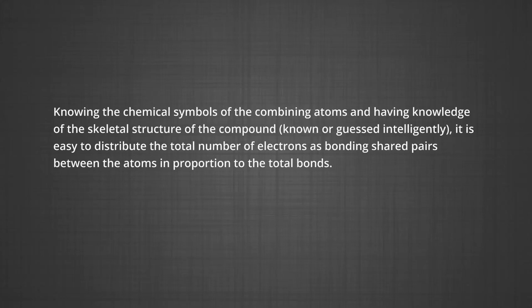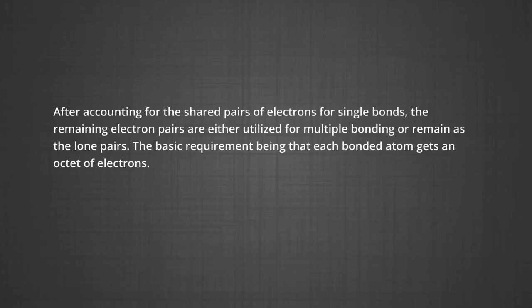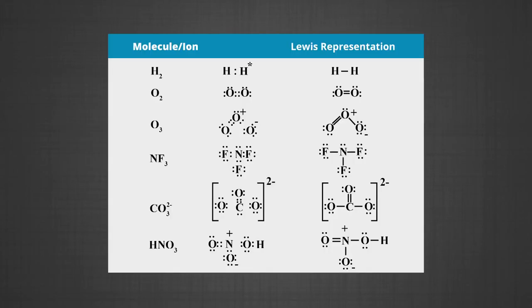It is easy to distribute the total number of electrons as bonding shared pairs between atoms in proportion to the total bonds. In general, the least electronegative atom occupies the central position in the molecule or ion — for example, in NF3 and CO3 2−, nitrogen and carbon are the central atoms, while fluorine and oxygen occupy terminal positions. After accounting for shared pairs for single bonds, remaining electron pairs are used for multiple bonding or remain as lone pairs, with the basic requirement that each bonded atom gets an octet of electrons.